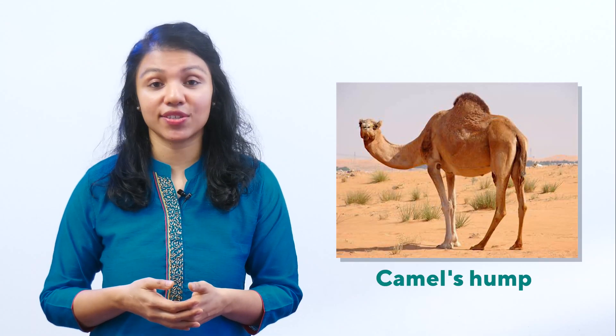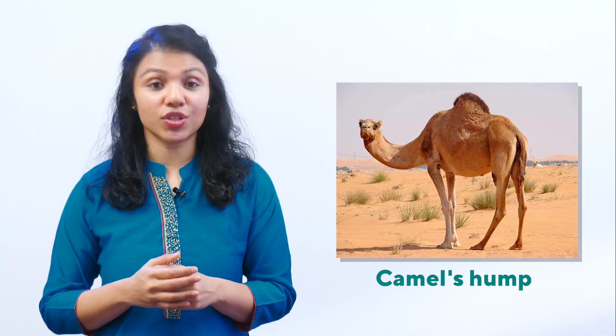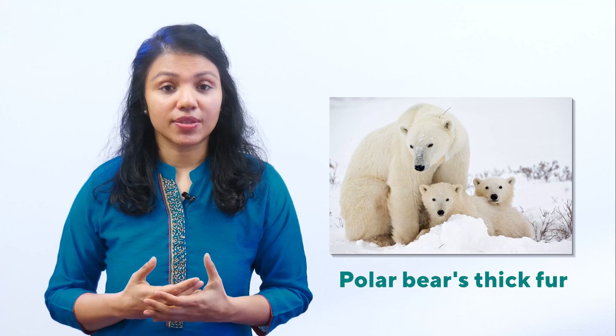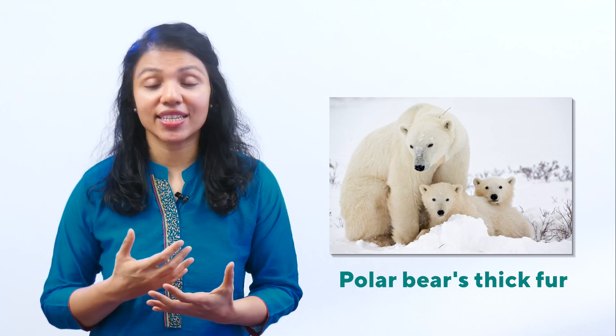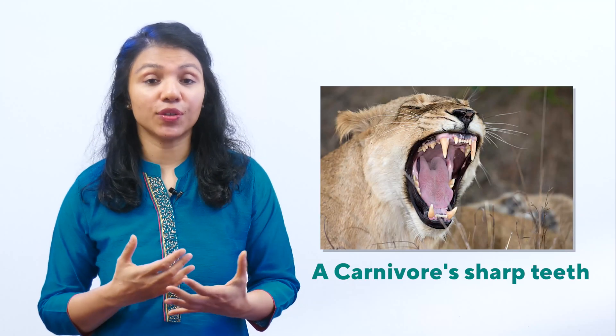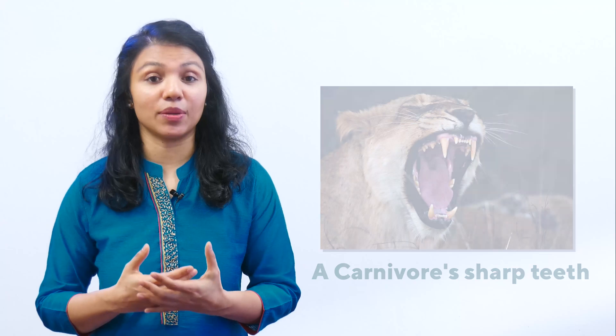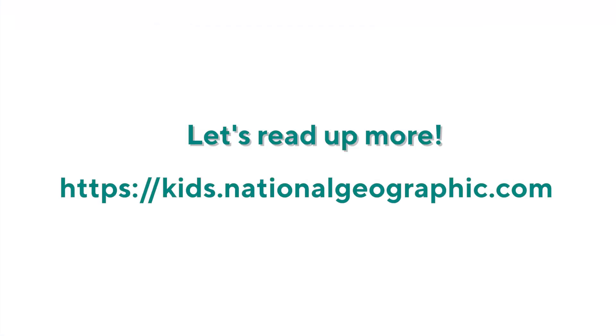Herbivores will have certain adaptations and carnivores will have other adaptations. For example, a camel lives in a hot desert and has a hump which stores water and fat. A polar bear living in the polar regions has very thick fur as an adaptation. Carnivores — flesh-eating animals — have very sharp teeth as their adaptation. There is a lot of scope for research in this area using books, articles, or the internet.